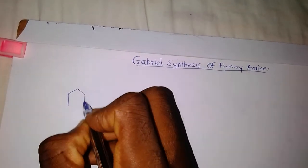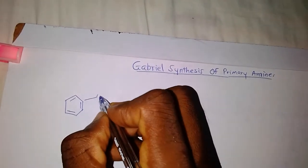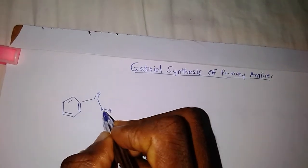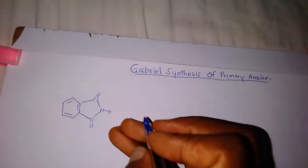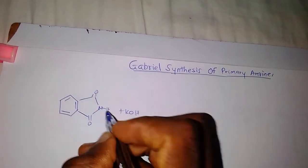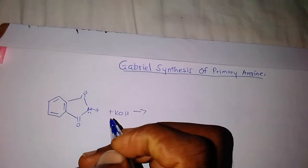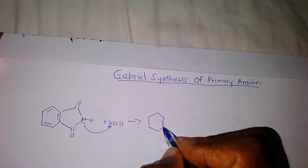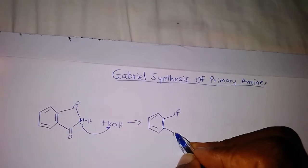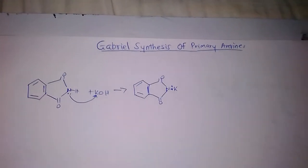The starting material is ethylamide. When you treat ethylamide with potassium hydroxide, you are going to generate a potassium phthalamide. The lone pair on the nitrogen will abstract the potassium to generate a potassium phthalamide.